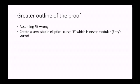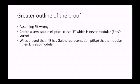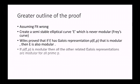We have assumed that FLT is wrong, and on the basis of that we can create a semi-stable elliptic curve e which is never modular. Now Wiles had proven that if this e has Galois representation rho e that is modular, then e is also modular. If rho e is modular, then all other related Galois representations are modular for all prime p. Now this third and the fourth point forms the lifting theorem, and this is significant as we will be using it later on.